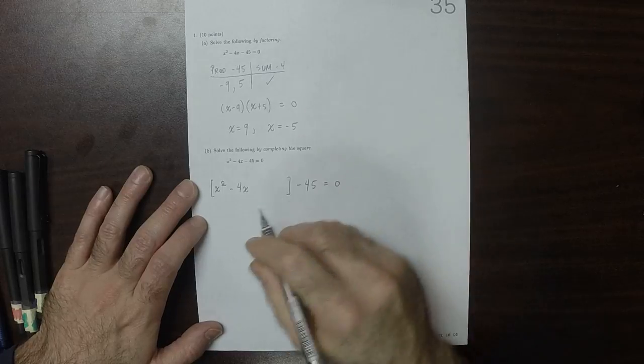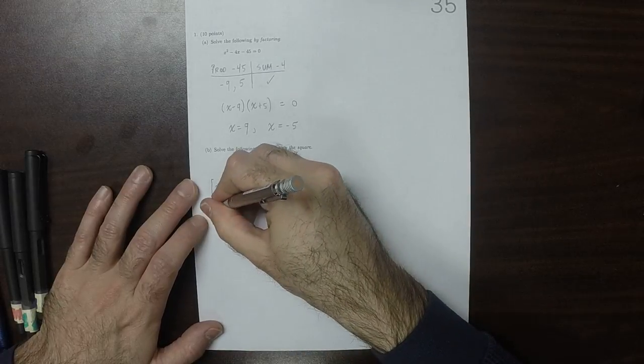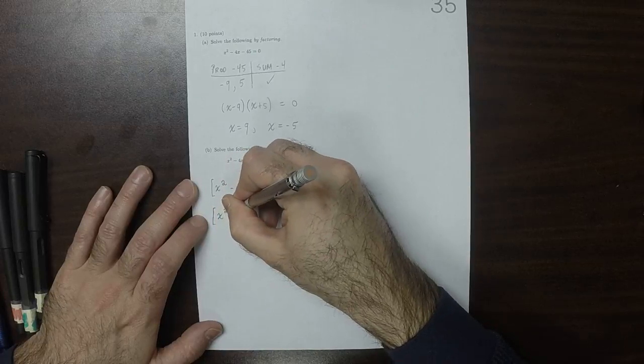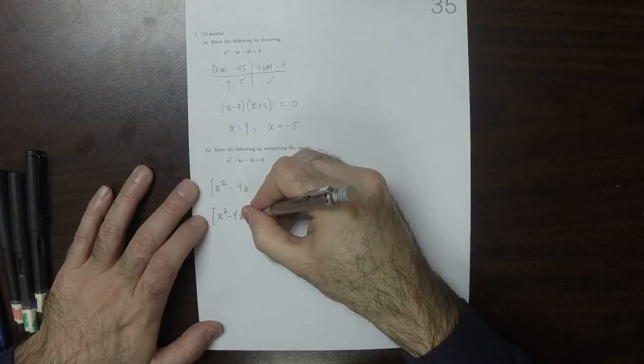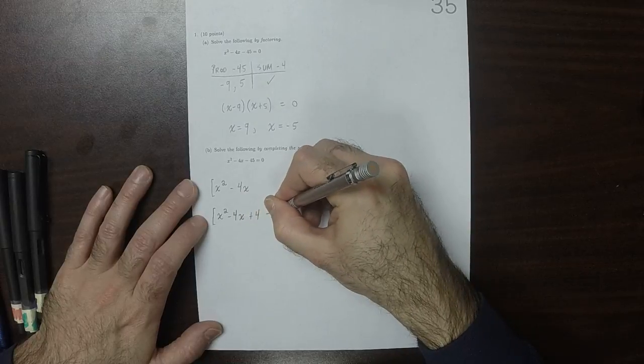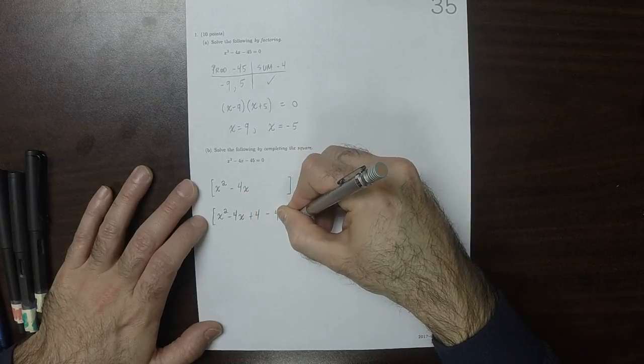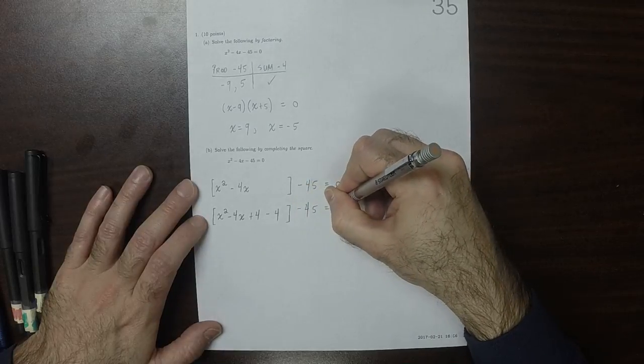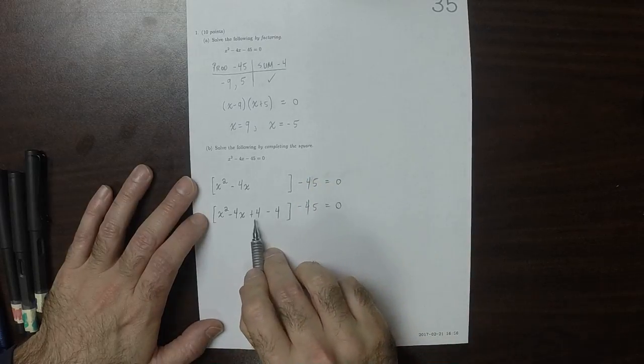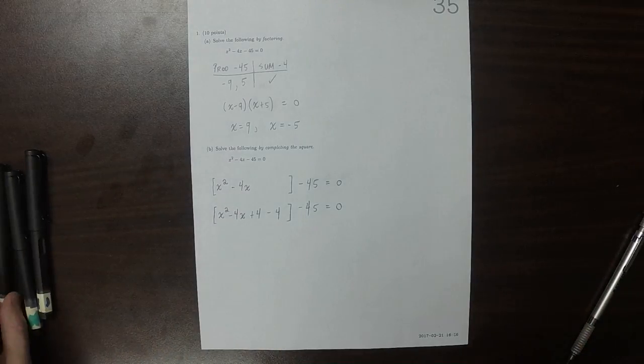and then in those square parentheses, we're going to add 4 and subtract 4. So adding 4 and subtracting 4, that's the same as having done nothing.